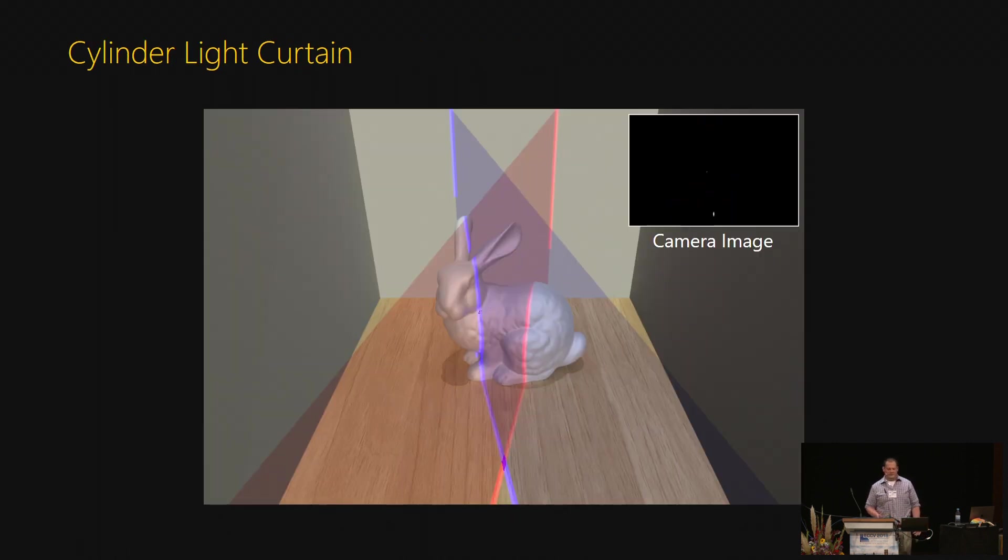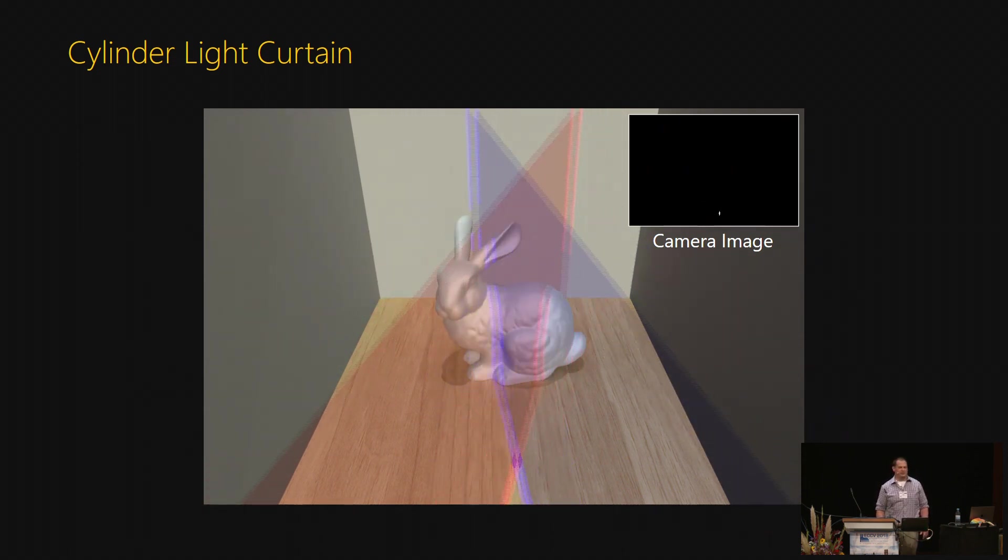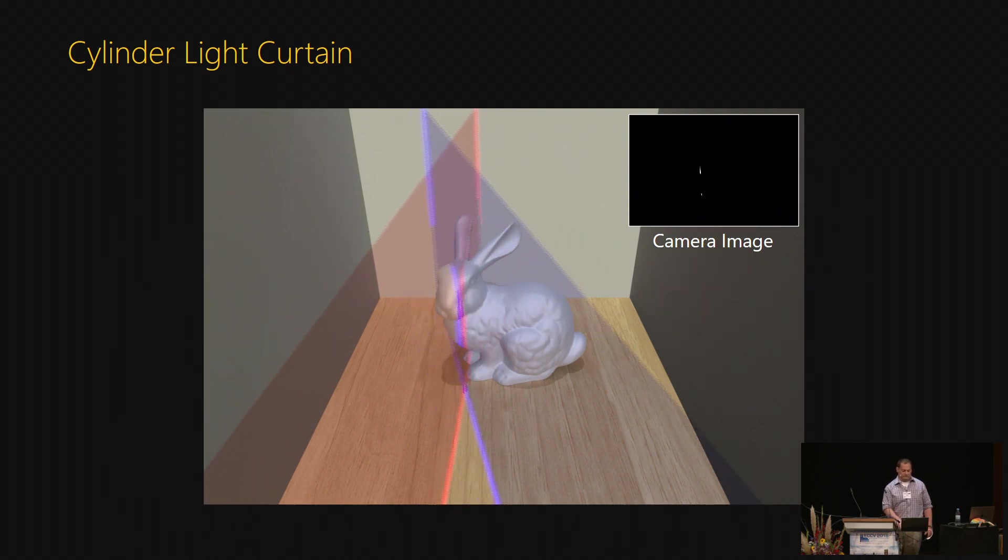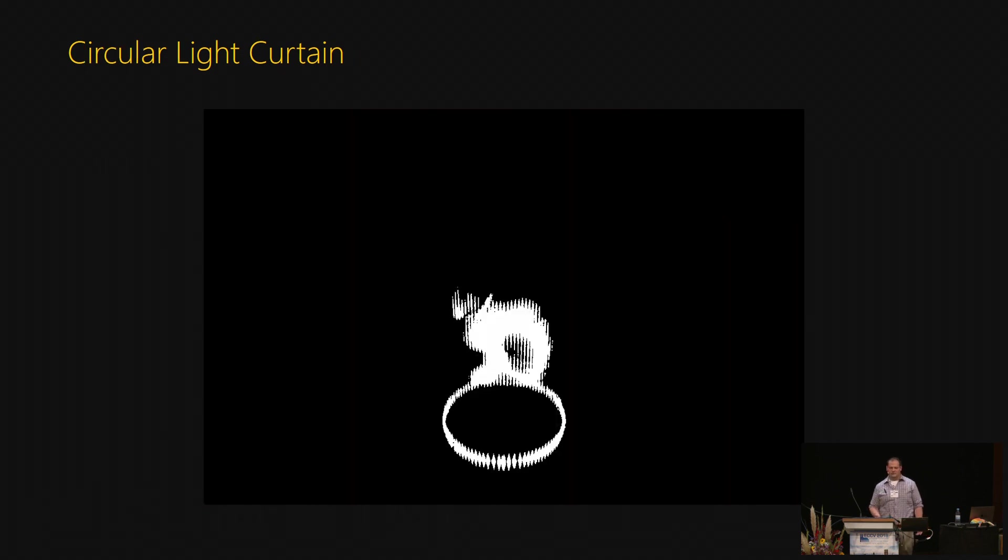Now, we are not restricted to just planes. By changing the relative angle between the two planes, you can create other surfaces. Like here, our surface is a cylinder. You can see the circular path by watching the intersection of the planes where they meet at the floor. Here, you can see the circle that was traced by that curtain.